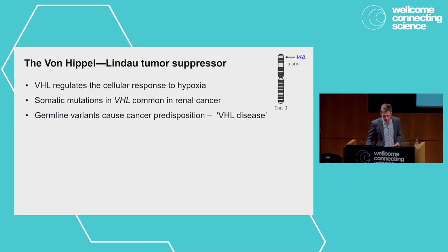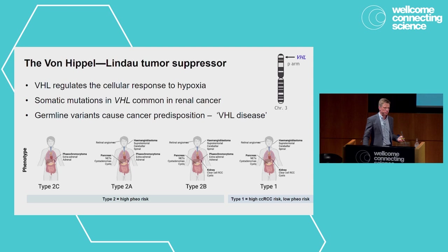Some background on VHL: VHL is a tumor suppressor that plays a key role in regulating the cellular response to hypoxia. It's an E3 ligase that degrades HIF. Somatic mutations in VHL are very common in renal cell carcinoma, particularly clear cell. And germline variants cause a predisposition syndrome known as VHL disease.